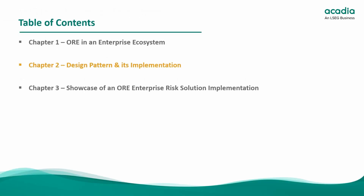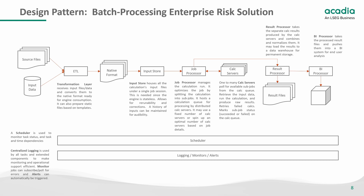Next we'll talk about a design pattern for batch processing enterprise risk solutions, but let's first define a few terms. A design pattern is a reusable solution to a commonly occurring problem within a given context. Here that problem is: one, batch processing — a workflow method of processing data and running calculations in batch rather than real-time — and two, enterprise risk solutions, meaning a financial risk solution that operates at an enterprise scale. In this diagram we move from left to right, and across the bottom we have processes that span the entire solution. We start with input data, which can come from files or databases, in different formats and available at different times.